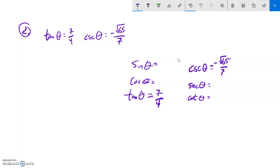So that means that if tangent is 7 fourths, cotangent must be 4 sevenths. If cosecant is negative 65 over 7, that means that sine would be negative 7 over root 65, which is the same as negative 7 root 65 over 65. So really I just need cosine and secant.